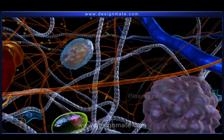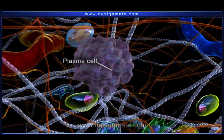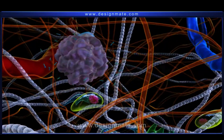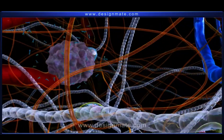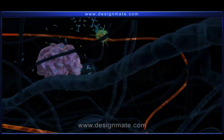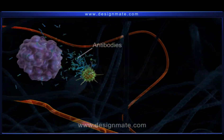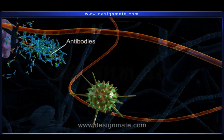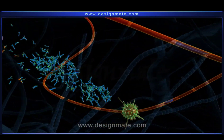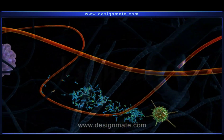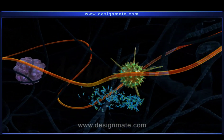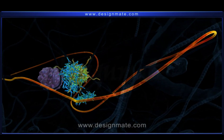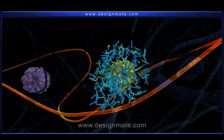The plasma cell present in this tissue produces antibodies, which are an important component of the body's immune system and destroy the invading microbes.